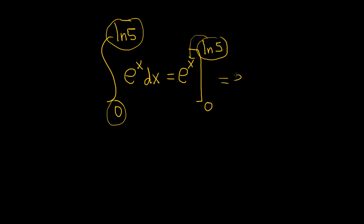So this is equal to e to the natural log of 5. Then you subtract and take the bottom number and plug it in for your x — so e to the 0. The e and the ln will cancel, giving us 5, minus 1 since e to the 0 is 1.